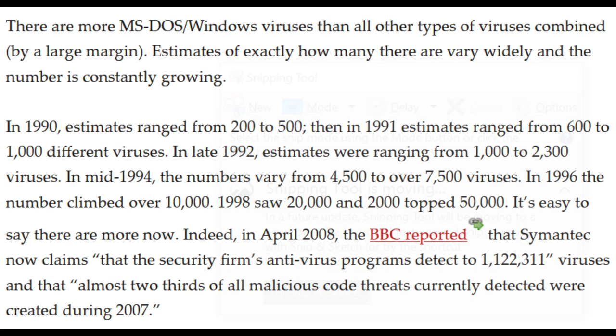1998 saw 20,000 and 2000 topped 50,000. It's easy to say there are more now. Indeed, in April 2008, the BBC reported that Kaspersky now claims that the security firm's anti-virus programs detect 1,122,311 viruses, and that almost two-thirds of all malicious code threats currently detected were created during 2007.